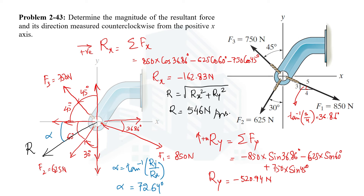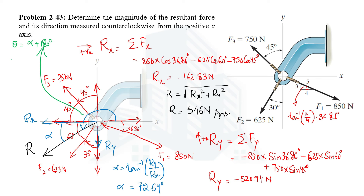That alpha angle is measured between the resultant and the negative x-axis. However, we are asked for the angle measured counterclockwise from the positive x-axis (theta). Since the angle from the positive x-axis to the negative x-axis is 180°, we add: theta = 180° + 72.64° = 253 degrees.